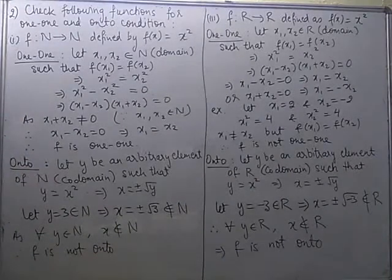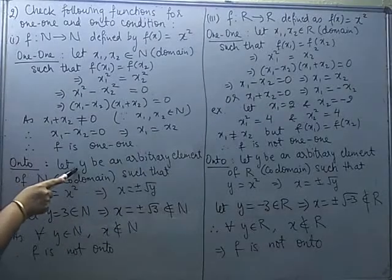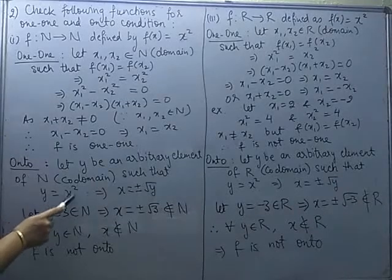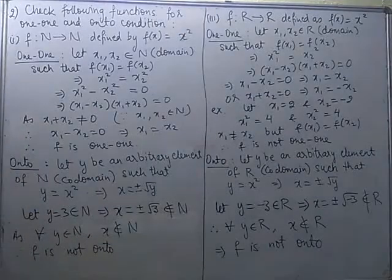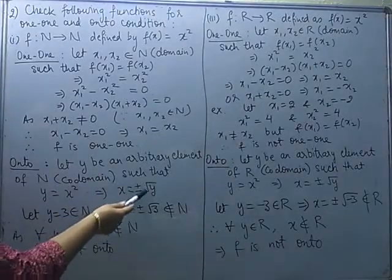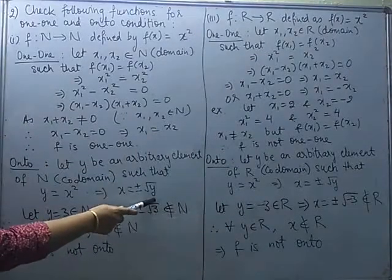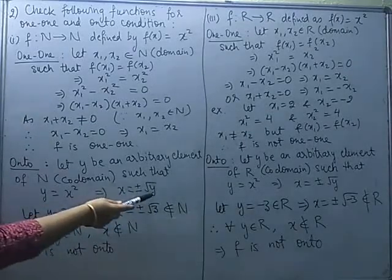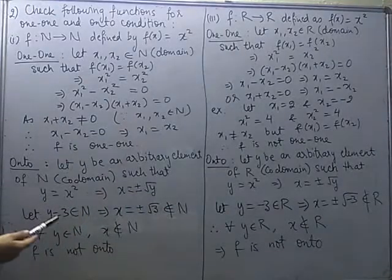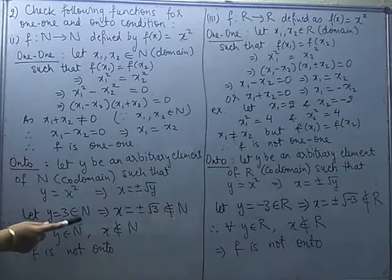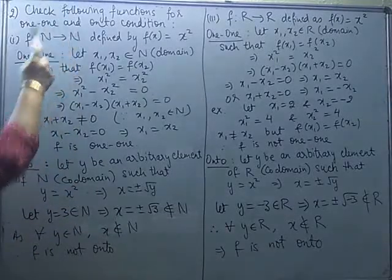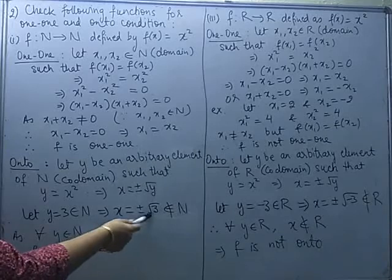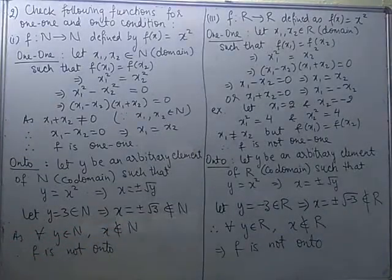Now let us check if it is onto. Take an arbitrary element y in the set of natural numbers (the codomain) such that y is the image of some x. So y = x², which gives x = ±√y. We know y is a natural number — for example, take y = 3, which is a natural number since the codomain is ℕ. Then x = ±√3.